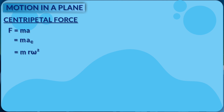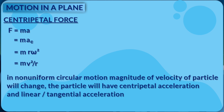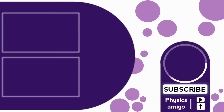Centripetal acceleration equals omega squared times R, or equivalently V squared divided by R. In uniform circular motion, the angular velocity magnitude is constant with centripetal acceleration only. In non-uniform circular motion, the angular velocity magnitude changes, giving both centripetal and tangential acceleration. This completes the chapter on motion in a plane. Namaskar.